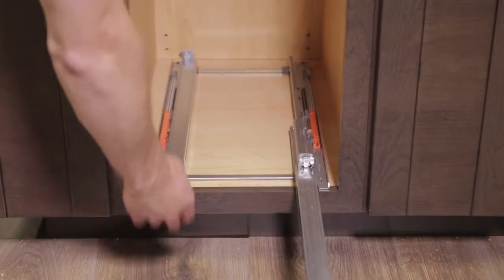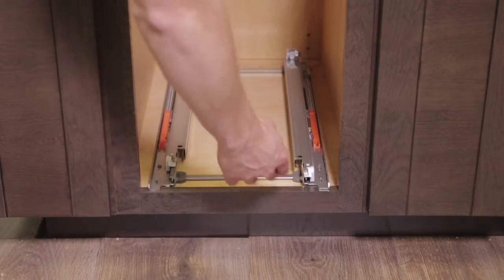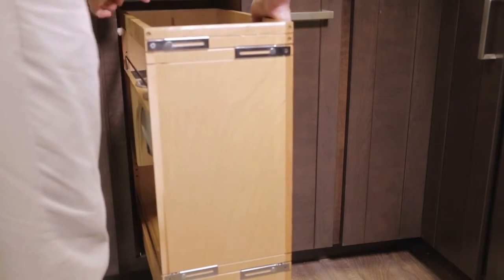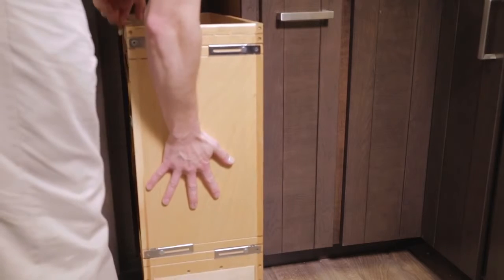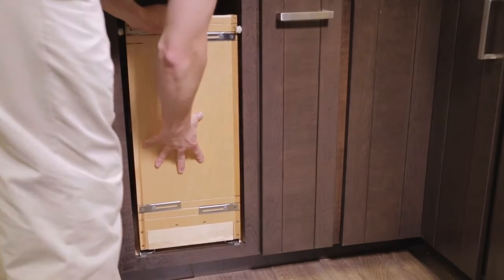With the slides in the fully closed position, carefully place the pullout chassis into your cabinet. Push the unit all the way into the cabinet to engage the slides.